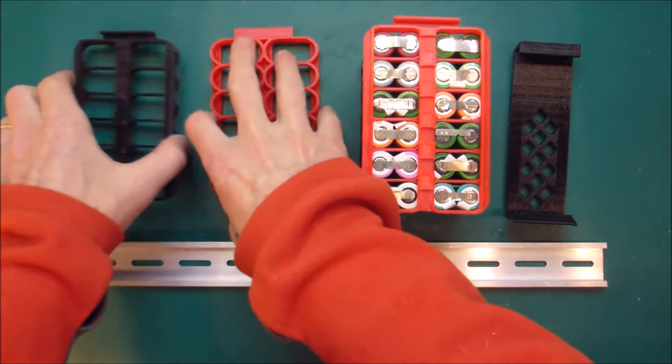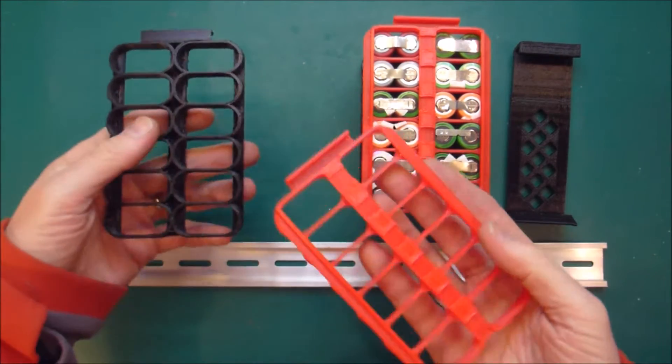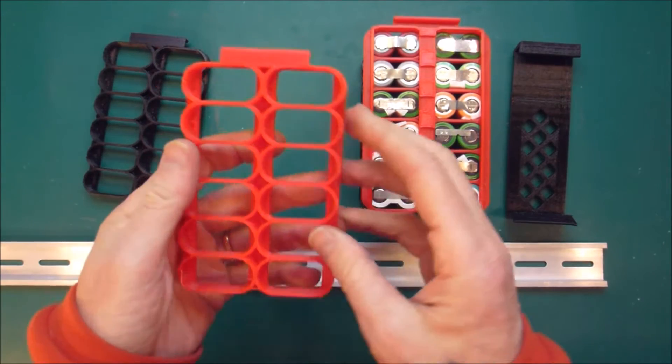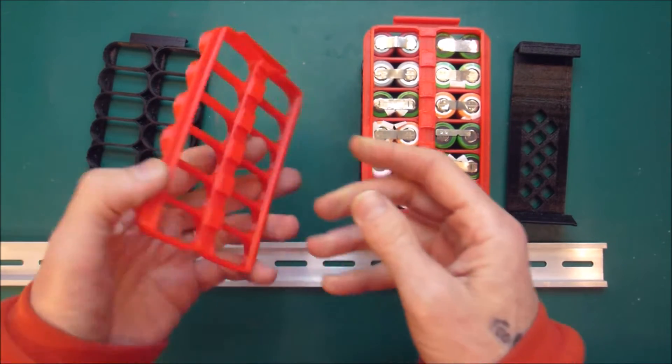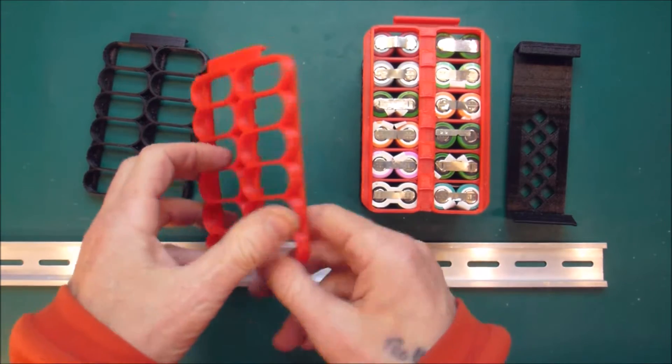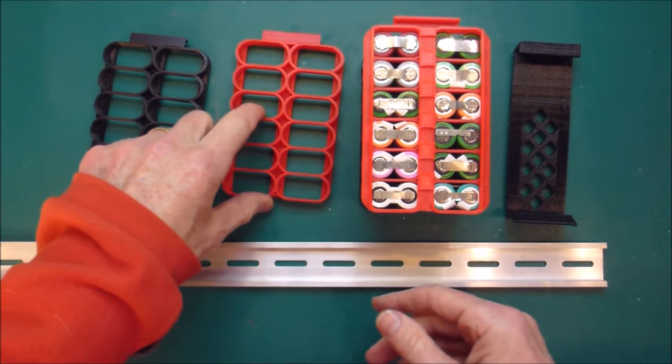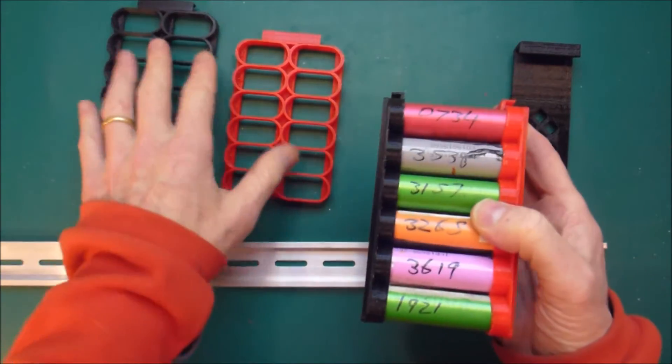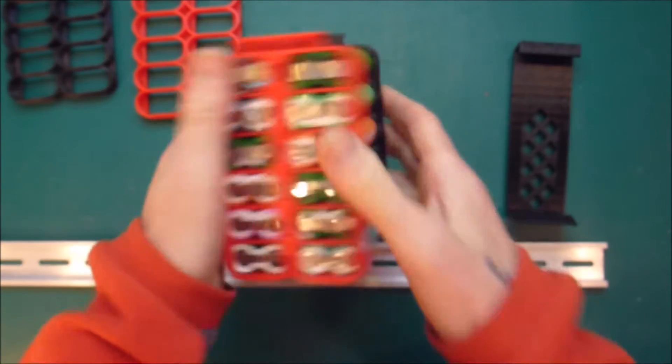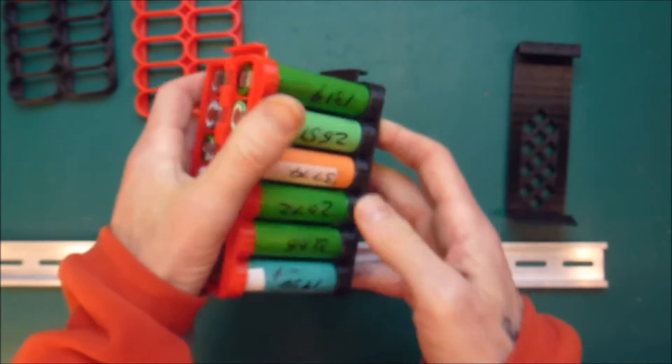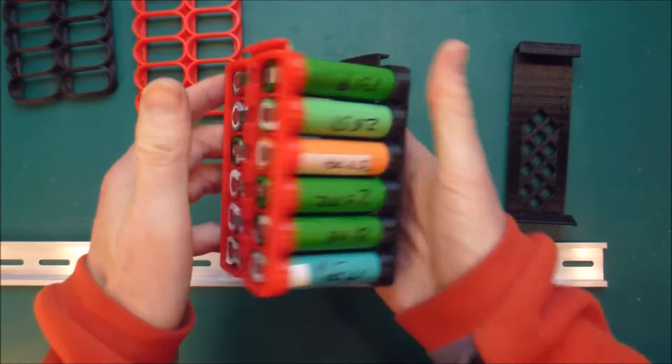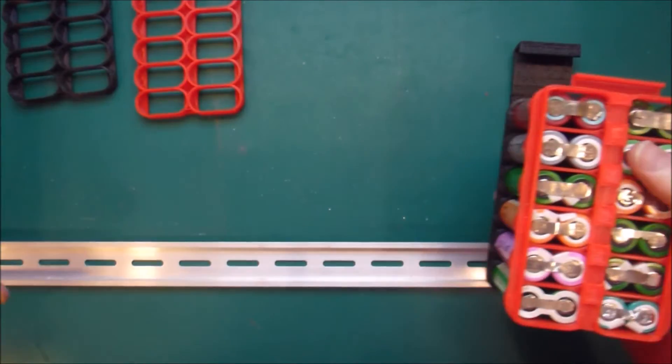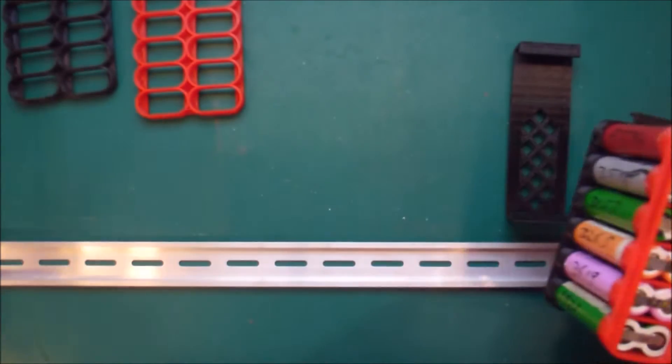I showed these previously, these are the 3D printed battery holders that I have designed and you can download them from Thingiverse.com. Those together go to make a nice 24-cell group which you can solder in parallel and then put 7 of those in series to make a 24-volt one kilowatt-hour pack.